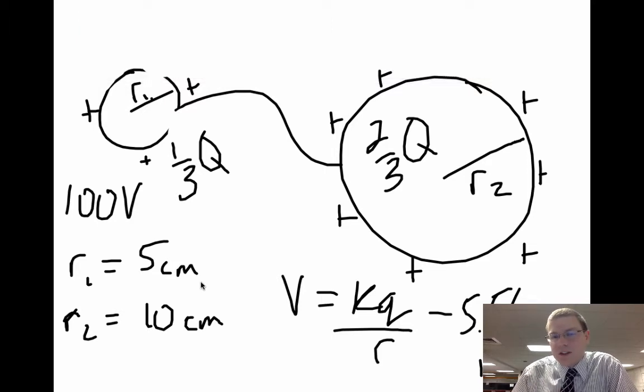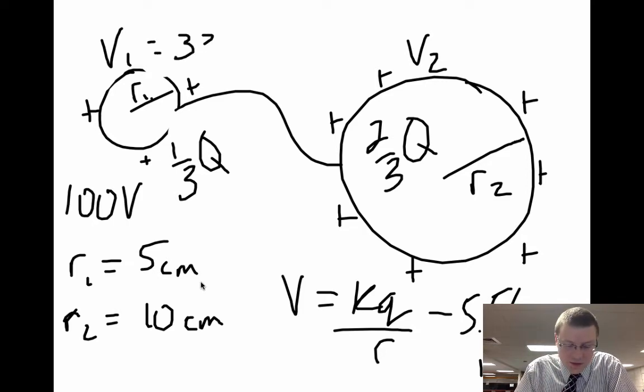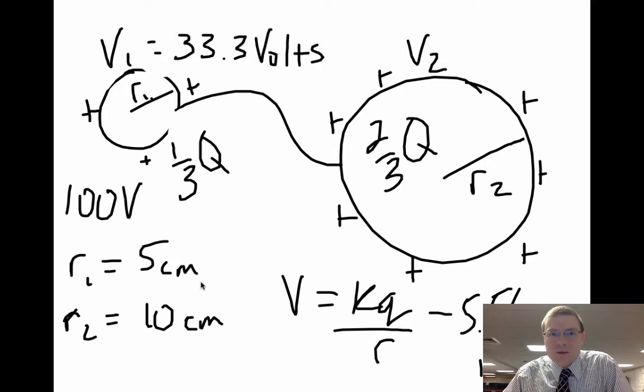Now that we know the charge on each sphere, we can figure out their voltage. You can solve for V1 or V2, it doesn't really matter, as long as you use the right radiuses and the right charges. Putting in your values there, you should get around 33.3 volts. And so both spheres have come to the same potential level when all is said and done, all the transfers happen.